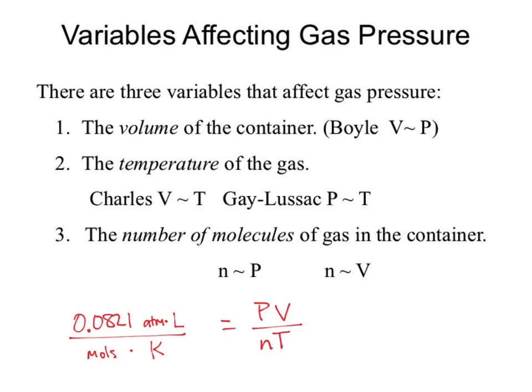Because some people don't like fractions, somebody rewrote it as PV = nRT. What we have defined is the ideal gas law — or as chemists call it, PIVNRT. PV = nRT is used for all gases, assuming ideality. Pressure times volume will always equal the moles times the ideal gas constant times the temperature. This is an equation you should memorize.